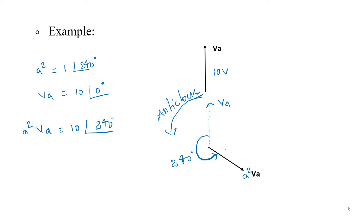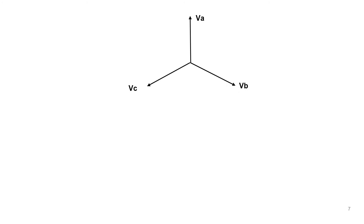The magnitude will be the same as Va. So now coming to the actual concept: the main aim of operator A is to represent all three phases with respect to a reference phasor. Out of three phases, one phase will be considered as reference, and the other two phases will also be represented in terms of the reference phase. Here I am considering Va as the reference phasor, and I want to represent Vb and Vc in terms of Va.